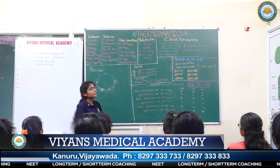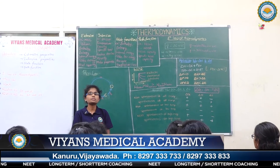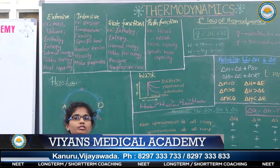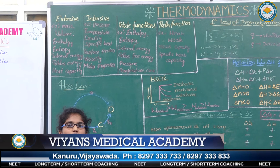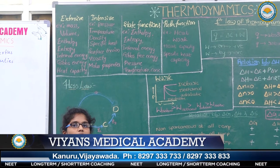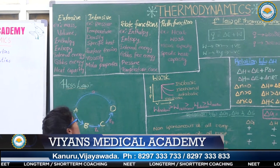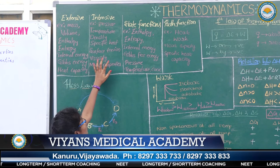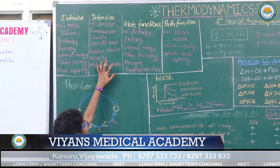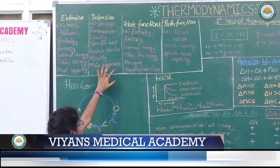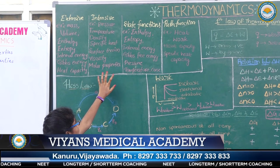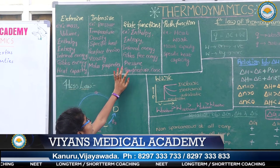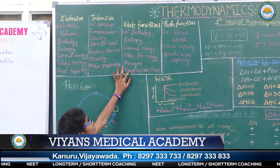Next, state function. The properties which depend upon the initial and final state of the system are known as state functions. Examples of state functions are enthalpy, entropy, internal energy, Gibbs free energy, pressure, temperature and concentration.